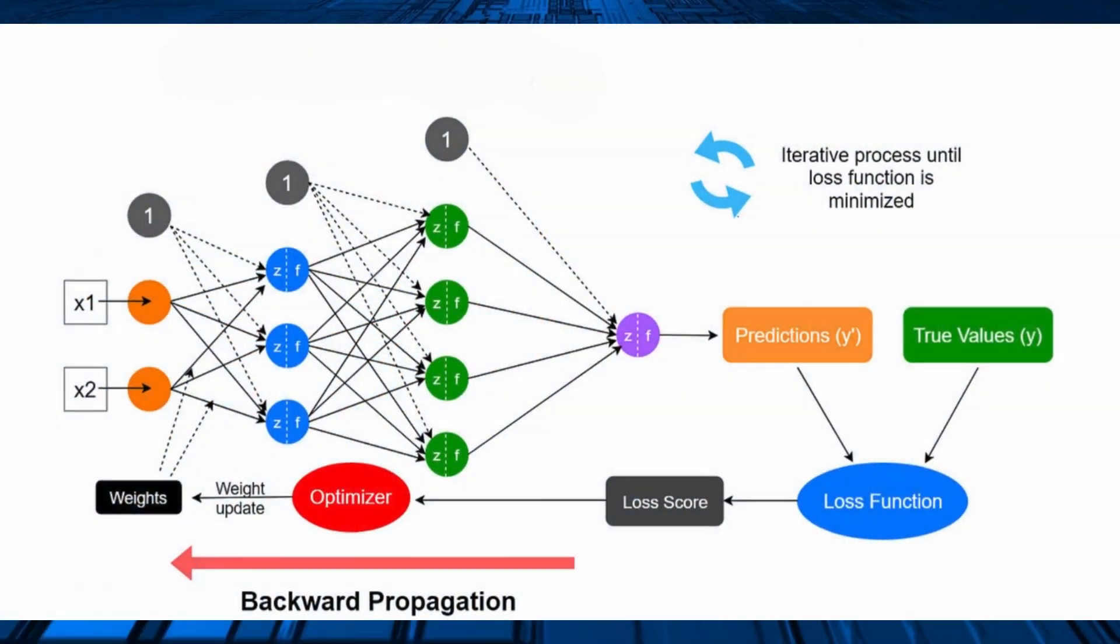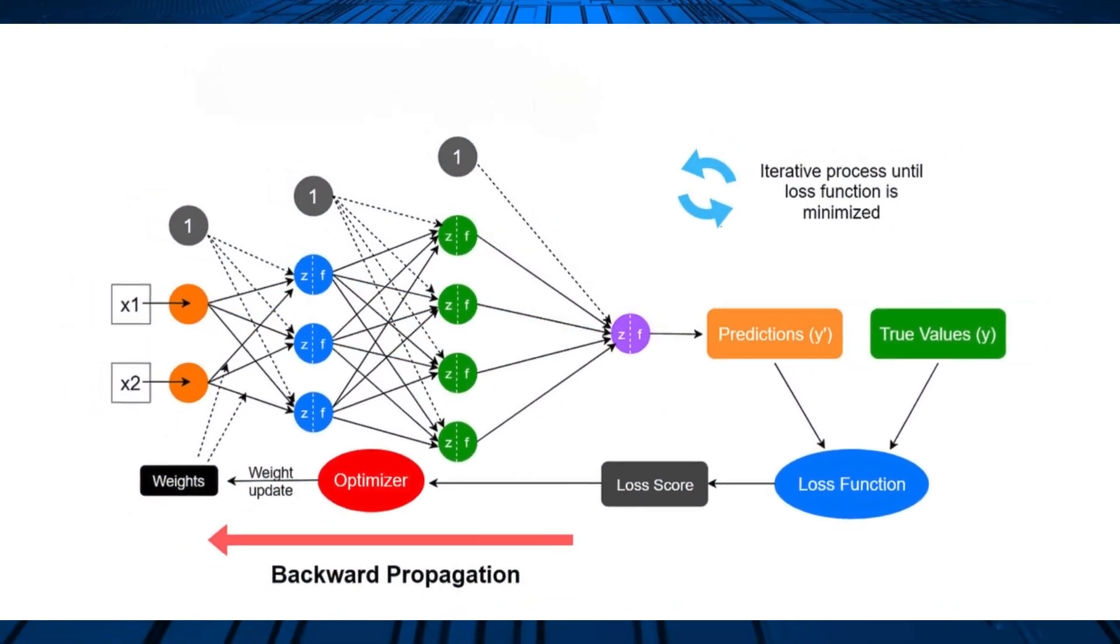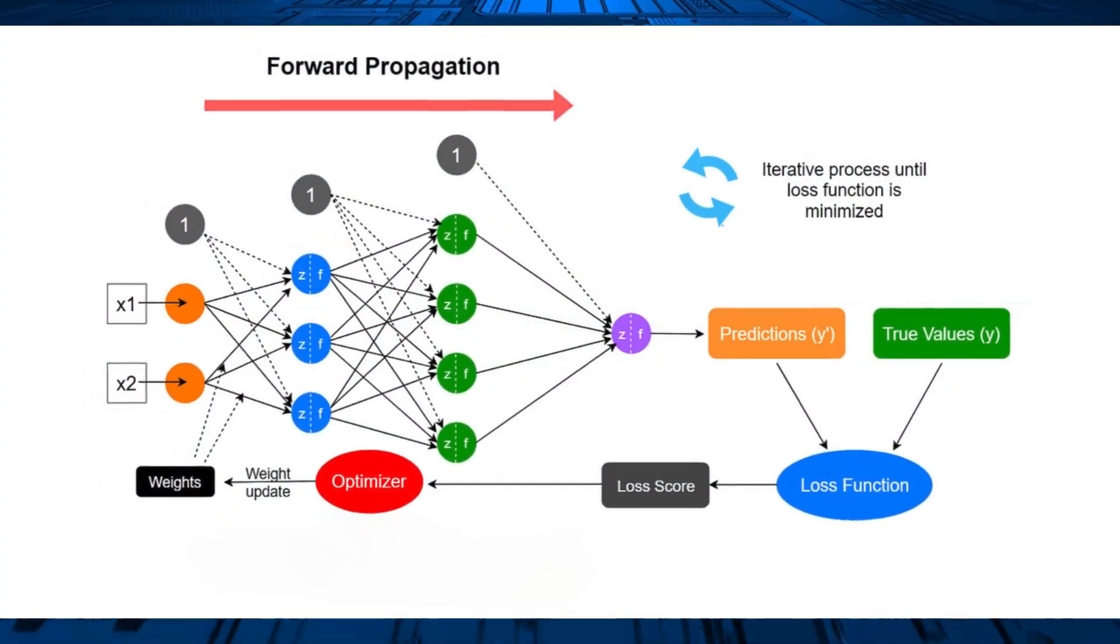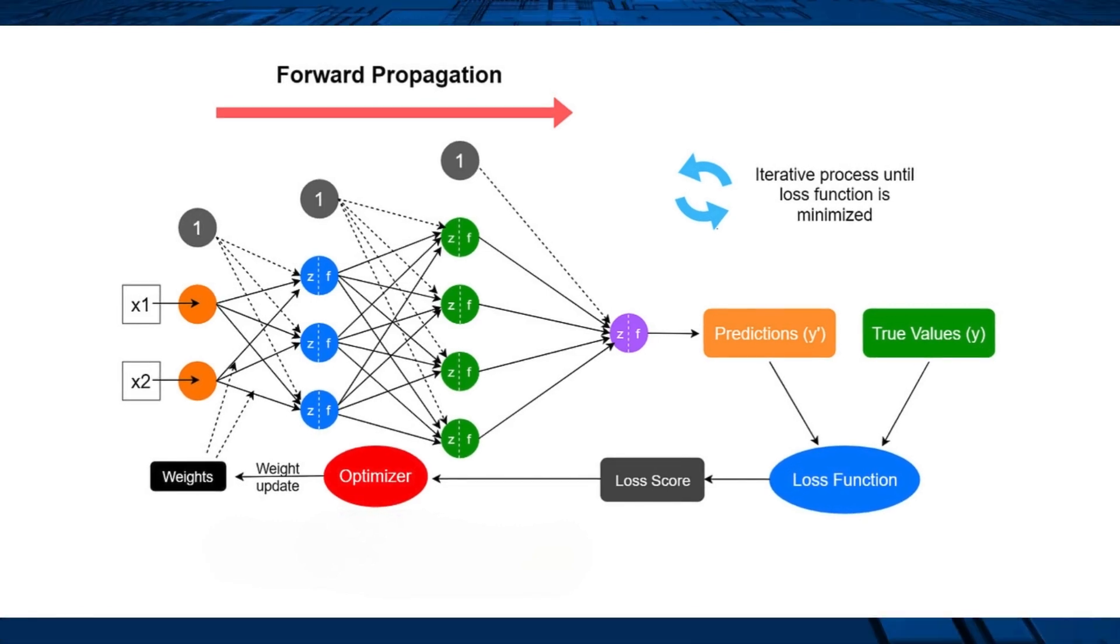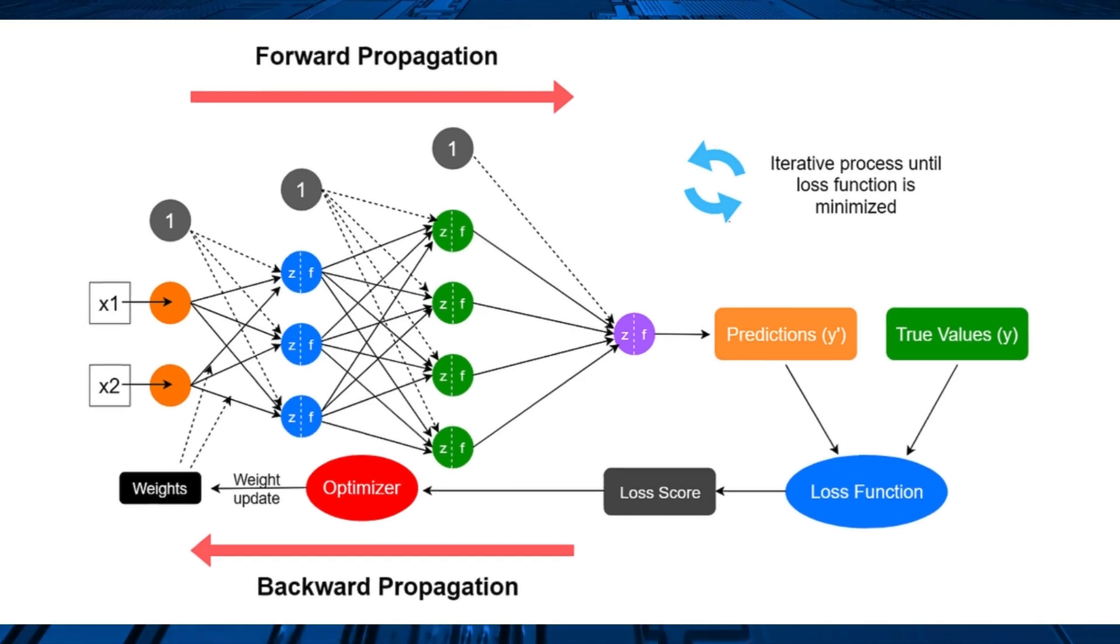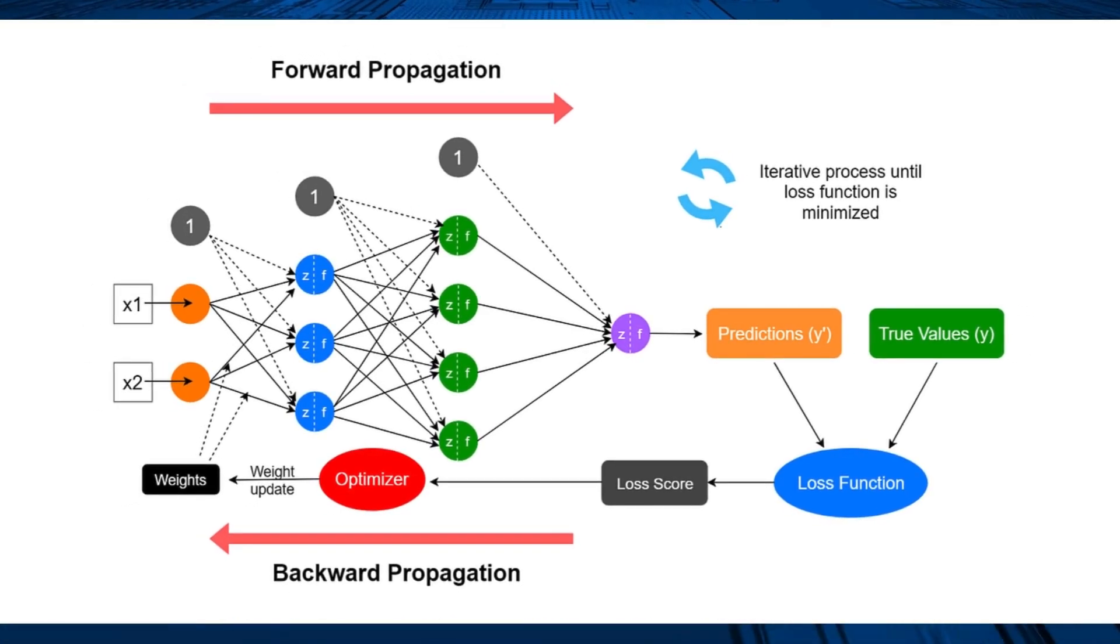Backward propagation is the process of moving from right, that is output layer, to left, input layer. Forward propagation is the way data moves from left, that is input layer, to right, that is output layer, in the neural network. A neural network can be understood by a collection of connected input or output nodes.